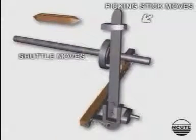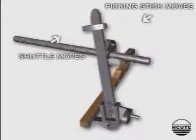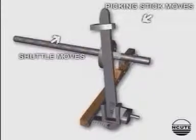This action is now transferred to the picking stick which turns inward. The picker then strikes the shuttle to insert the weft. The picking stick, picker and side lever are returned to their original positions by the spring.